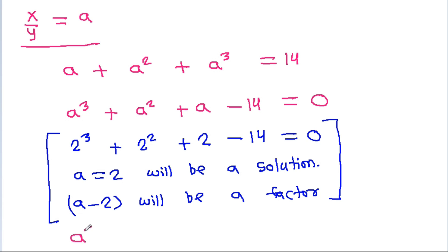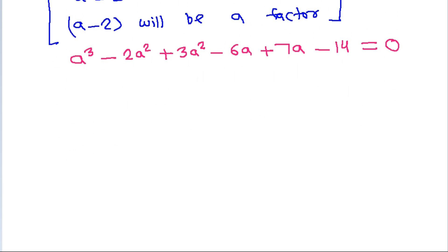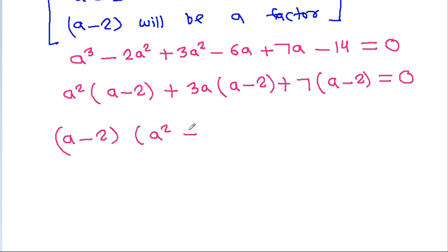So we factor the cubic: a³ + a² + a - 14 = 0 can be written as a²(a - 2) + 3a(a - 2) + 7(a - 2) = 0. Taking (a - 2) common, we get (a - 2)(a² + 3a + 7) = 0.